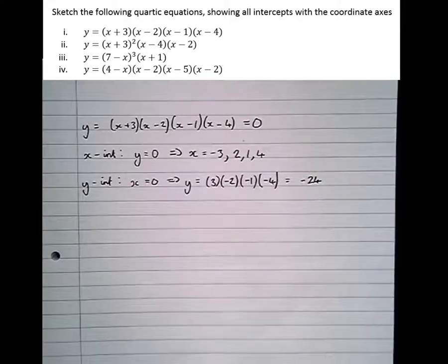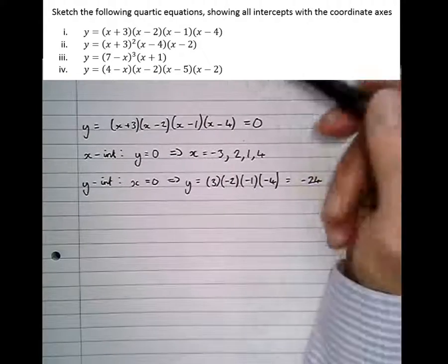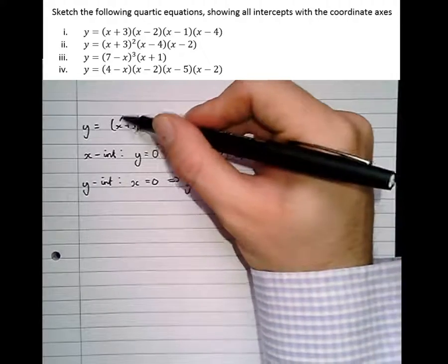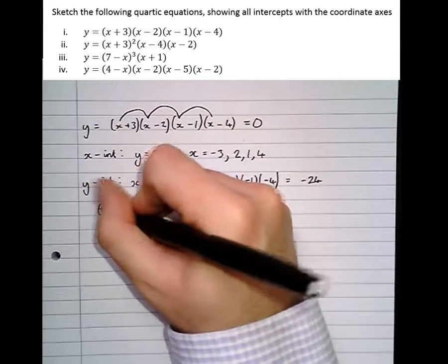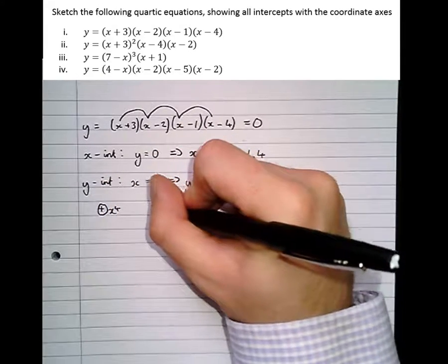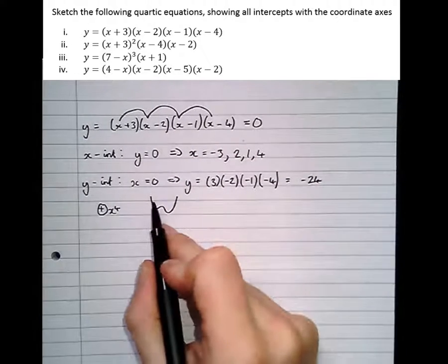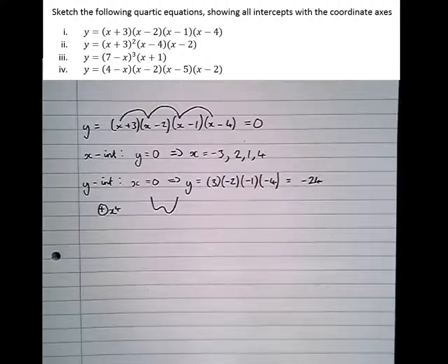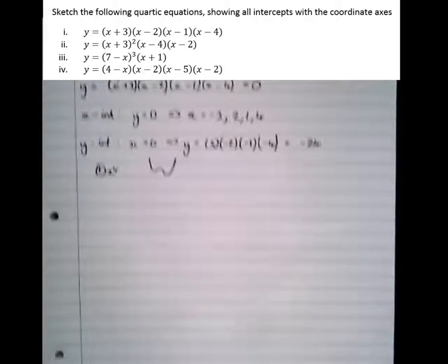Then we've got to decide whether it's a positive quartic or a negative quartic. We'll do that by timesing the x-terms out: x times x times x times x is positive x to the 4, which means that the quartic equation is going to start top left and end in top right, with a number of stationary points to be determined.